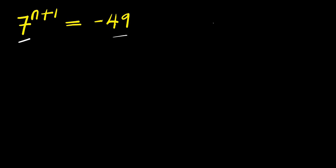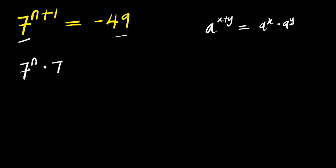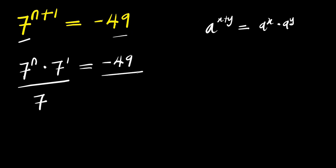If you have a to the power of x plus y, this equals a to the power of x times a to the power of y. So what we are going to have here is 7 to the power n times 7 to the power 1 equals negative 49. So we divide this by 7, and 7 eliminates 7, giving us 7 to the power n equals negative 49 divided by 7, which is negative 7.